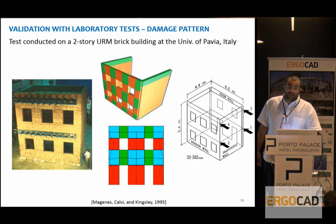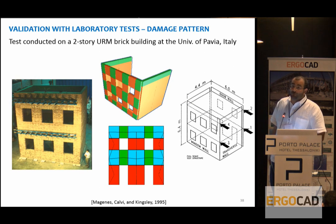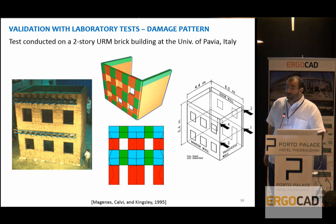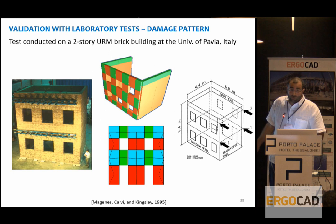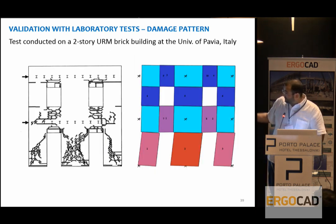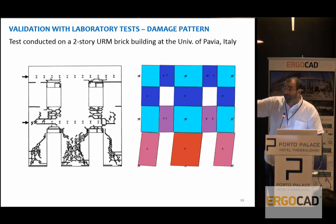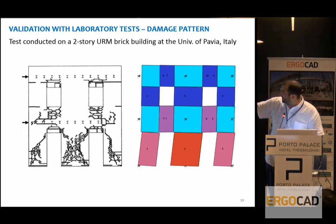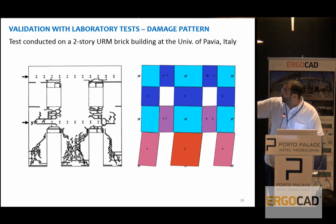Here is a small example of an application of this modeling to a building tested at the University of Pavia in the 1990s. A 3D model was carried out on this fairly regular building. The experimental damage pattern was quite well captured by the model — areas shaded in purple and red represent where shear damage occurred in elements, and you can see this corresponds quite well to the laboratory observations.